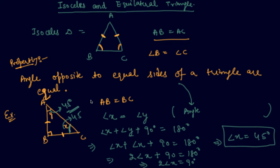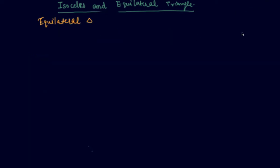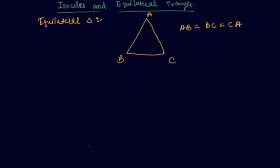I hope students you are clear about the property of isosceles triangles. Now let us come to equilateral triangles. As I told you in my previous lecture, in an equilateral triangle all three sides are equal: AB equals BC equals CA. The property of an equilateral triangle is that all angles — angle A, angle B, and angle C — are equal.